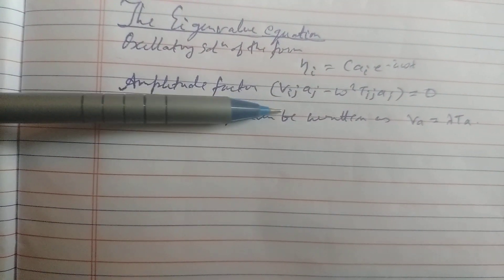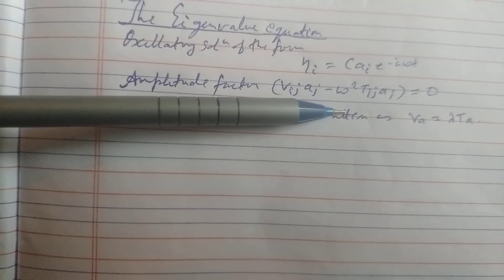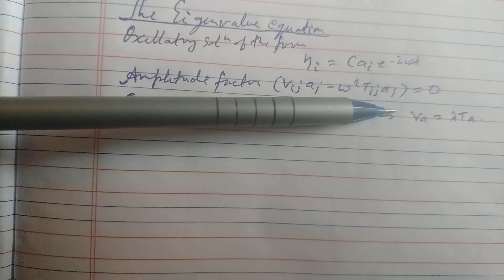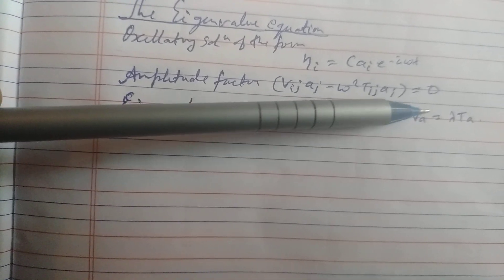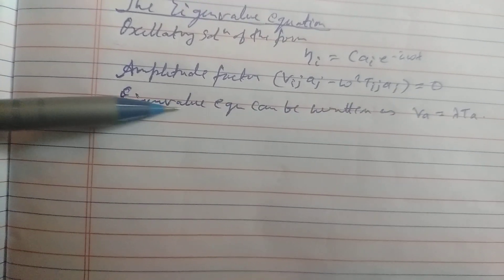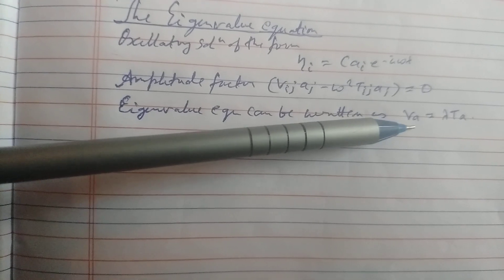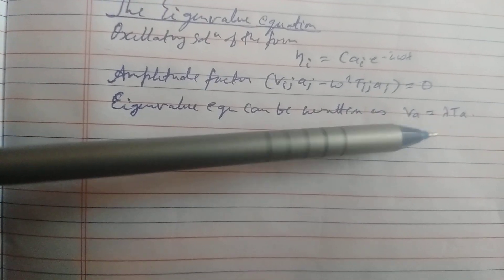The amplitude factor gives b_i a_j equal to minus omega squared T_ij a_j. Setting the determinant to zero, the eigenvalue equation can be written as B a equal to lambda T a.